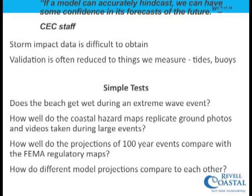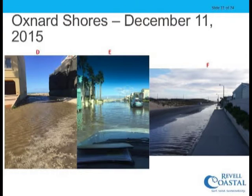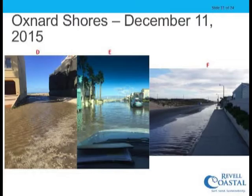Here are a couple of examples. This is Cosmos on the left, FEMA in the middle, and Coastal Resilience on the right — very different projections for a 100-year wave event. We haven't had a 100-year wave event at this site, but we did have a 20-to-25-year wave event on December 11, 2015. You can see waves came over the top of the beach, ponded in the streets, and backed up. Some of those projections can be compared against that actual event.